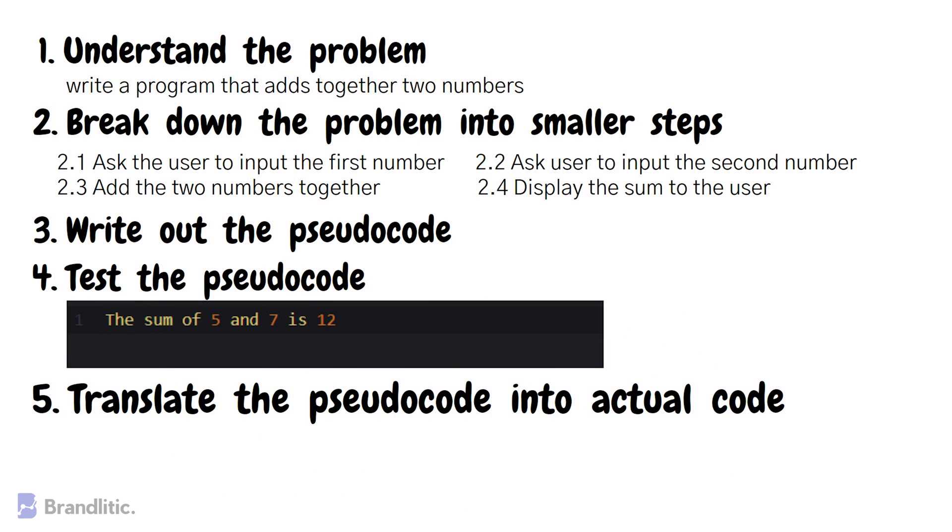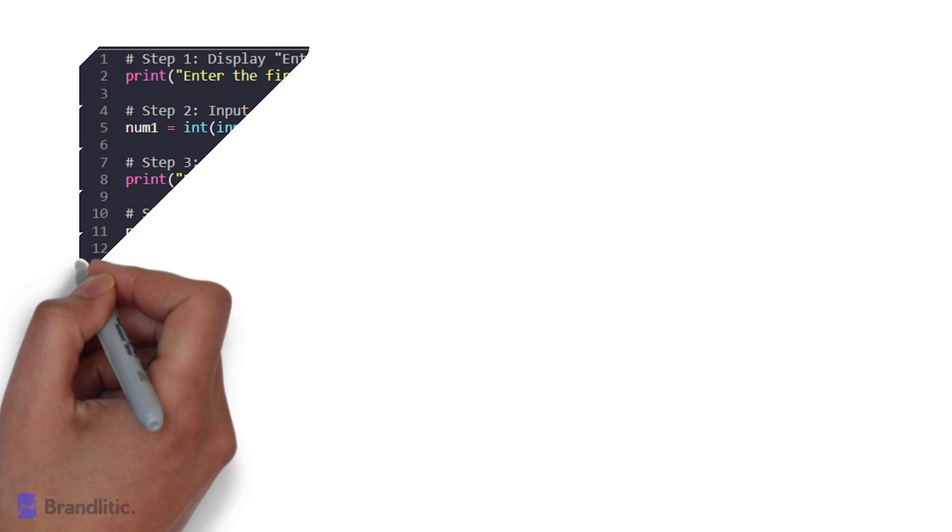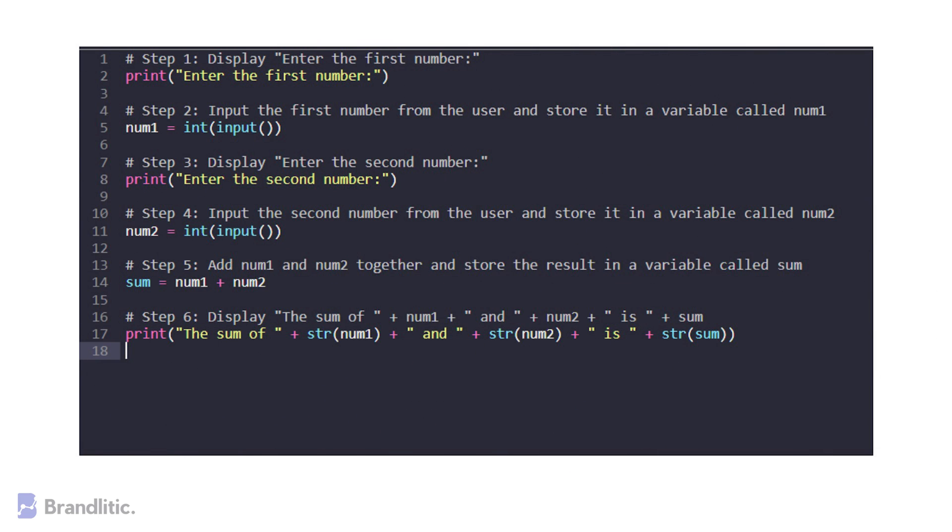Next step five, translate the pseudocode into actual code. Finally, we can translate the pseudocode into actual code using our programming language of choice. Here, let's complete the example with Python. The following code should stepwise be displayed as follows.